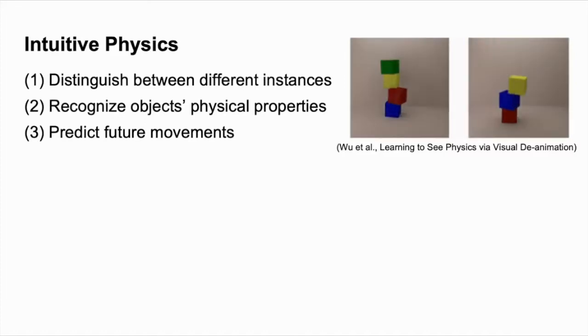Understanding the physical properties of interacting objects has been a long-standing goal in computer vision, robotics, and artificial intelligence. As humans, by merely watching objects interact, we are able to distinguish between different object instances, reason about their physical properties, and make predictions on their future movements.